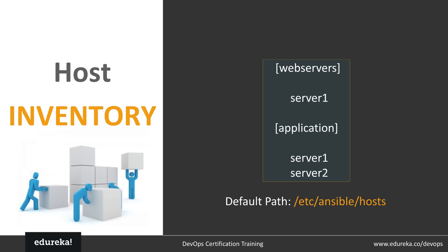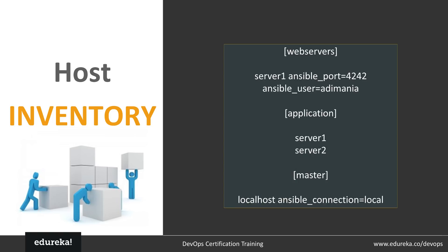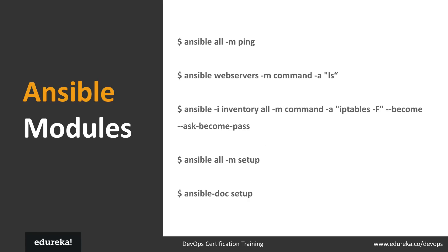By default, Ansible looks at the inventory file, but this can be modified by passing the inventory path to the Ansible command line. As shown on screen, you can list IP addresses of nodes and name groups of different IP addresses. For example, to group web servers and data servers separately, write the group name in square brackets. When making configuration changes only to the web server group, just mention the group name and Ansible will automatically configure those servers.